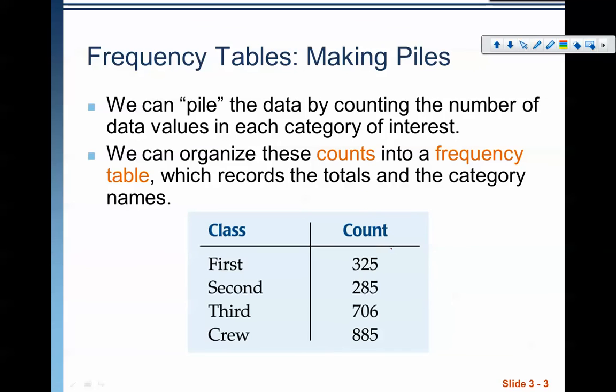Specifically with categorical data, we have a couple of different ways that we want to be able to represent it. First of all, we've got frequency tables. Categorical data is like putting things in buckets. Here we have a bucket, this first bucket has 325, this second bucket has 285 things in it, this third bucket has 706, and this crew bucket has 885. This example comes from the book itself, it's all about the Titanic and Titanic survivors. We have 325 people that were in first class, 285 in second, 706 in third, and 885 in crew. This type of data is simply a count. We have four different categories—that's where the term categorical variable comes from—and for each of these categories we have a count of how many things are in that category.